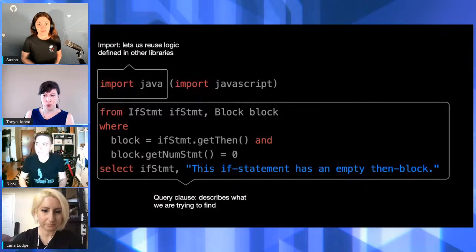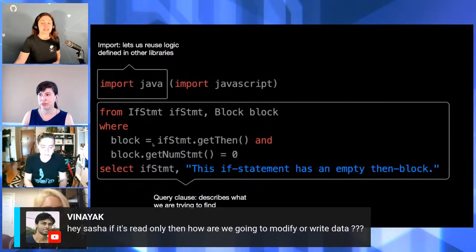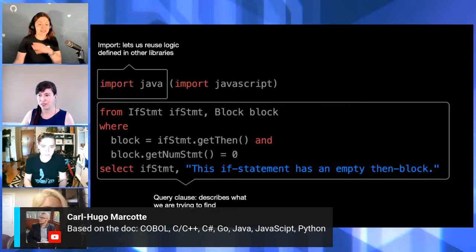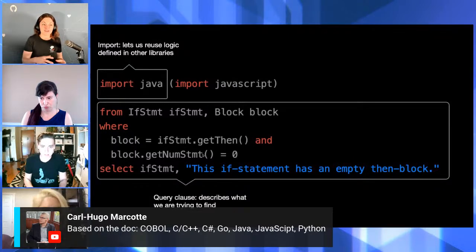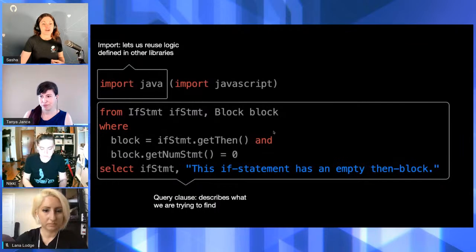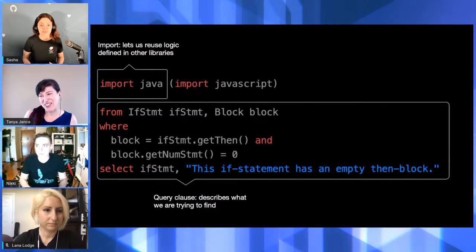Someone is asking: if it's read-only, how can they modify or write the data? Basically this equal sign is not an assignment — it's an assertion. I'm asserting that this block is an if-statement that has a getThen that is empty. Instead of assigning values, I am actually restricting the values that are returned. The format is always returning a subset of values. If I just said 'select if-statement' I would return all if-statements, but then I'm restricting and constructing the types of values I actually want to find.